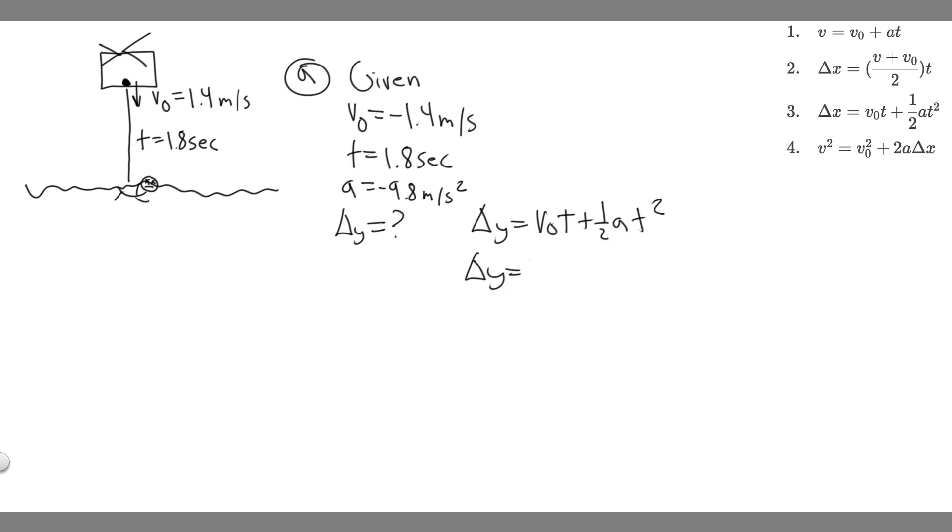Now we just plug in the values. v₀ is -1.4 times t which is 1.8, plus one-half times the acceleration which is -9.8, times 1.8 squared. So -1.4 times 1.8 plus 0.5 times -9.8 times 1.8 squared. When you calculate this, you get Δy = -18.396, which is basically -18.4.